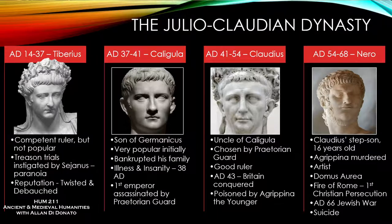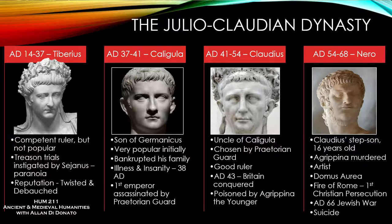Apparently he wasn't very good at any of these things, but he forced people to watch him perform and they had to applaud because he's the emperor — upsetting him risked your life. He was also very ungrateful. The mother that brought him to the throne, he ultimately murdered himself. One story is when he had a boat built for her rigged to sink in open water, trying to drown her — it failed. She got to shore safely, and he later had her stabbed to death.